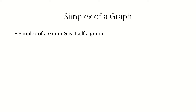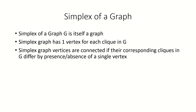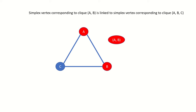The simplex of an undirected graph G is itself a graph, with one vertex for each clique in G. Two vertices in the simplex graph are connected if their corresponding cliques in the original graph G differ by the presence or absence of a single vertex. For example, the simplex graph vertex corresponding to the clique A, B would be linked to the vertex corresponding to the clique A, B, C, because they differ only in the presence or absence of a single vertex — vertex C.